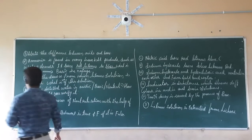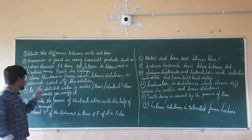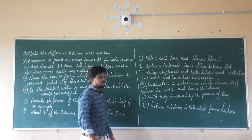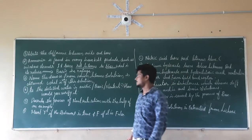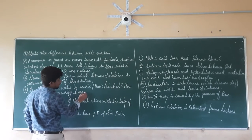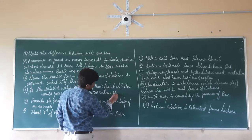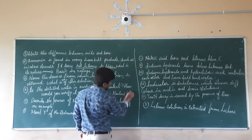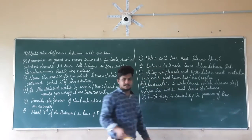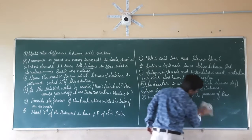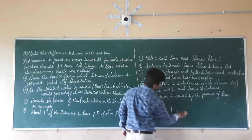Question number 4: If distilled water is acidic, basic, or neutral, how do you verify it? We already know that distilled water is a neutral solution. To verify it, we are going to take three test tubes and add distilled water into each — first test tube, second test tube, and third test tube.